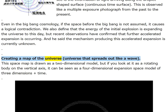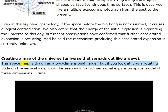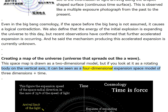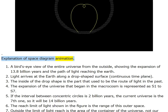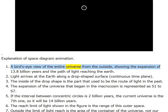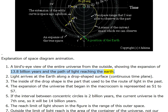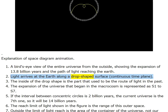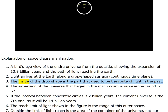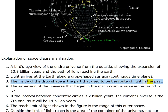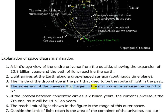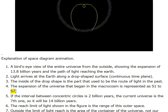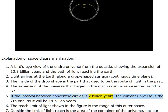Creating a map of the universe: the universe spreads out like a wave. This space map is drawn as a two-dimensional model, but viewed as a rotating body on the vertical axis it becomes a four-dimensional expansion space model of three dimensions plus time. A bird's-eye view of the entire universe shows the expansion of 13.8 billion years and the path of light reaching the earth along a drop-shaped continuous time plane.